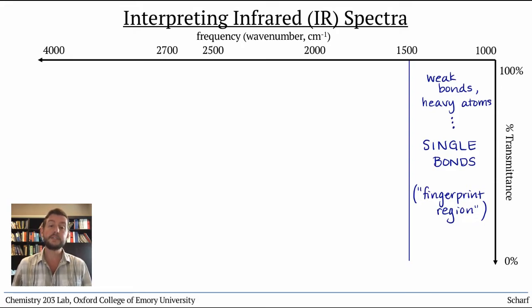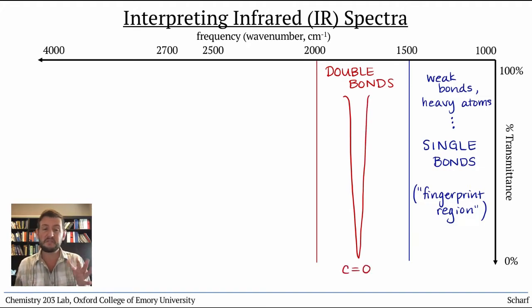The next region, from about 1500 to 2000 wavenumbers, corresponds to slightly stronger bonds, double bonds. Most prominent in this region are carbonyl groups, which can be anywhere between 1450 and 1850 wavenumbers, depending on the specific structure of the C=O double bond. These peaks are generally quite strong and are usually pretty easy to spot. C=N double bonds also appear in this region, but they are somewhat rarer than C=O double bonds.